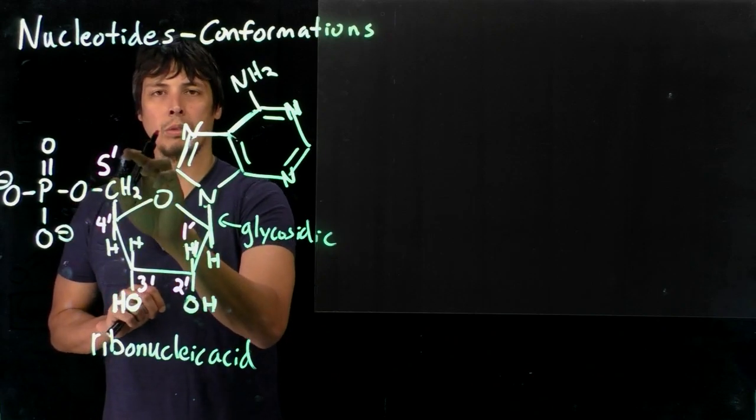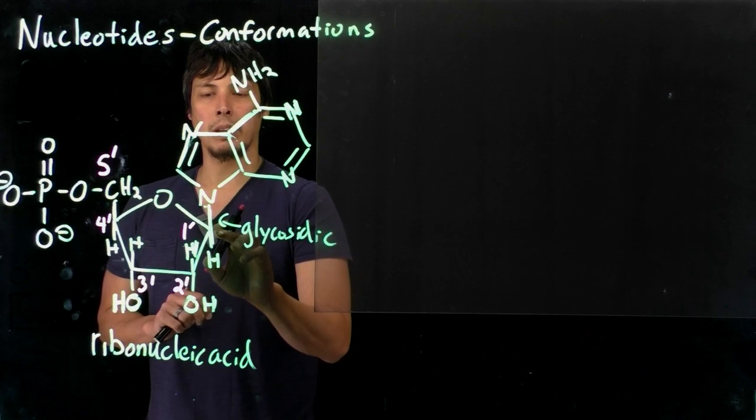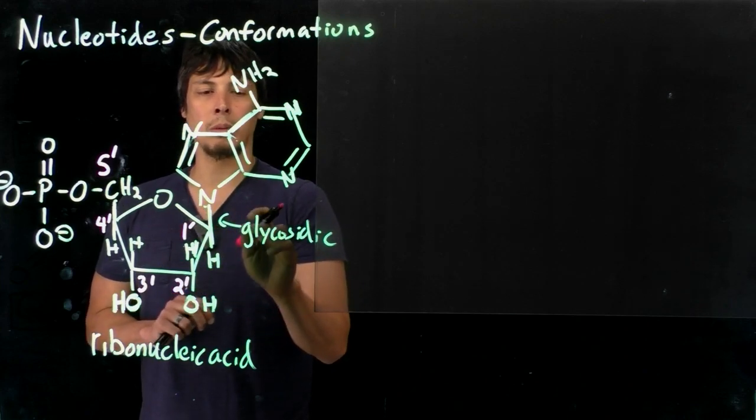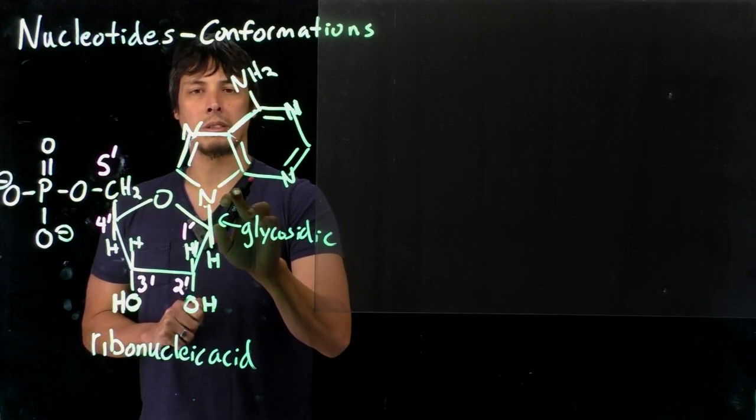The phosphate group is attached to the 5 prime carbon, and then finally we have the base at the anomeric carbon or the 1 prime carbon where we form the glycosidic bond with the nitrogenous base.